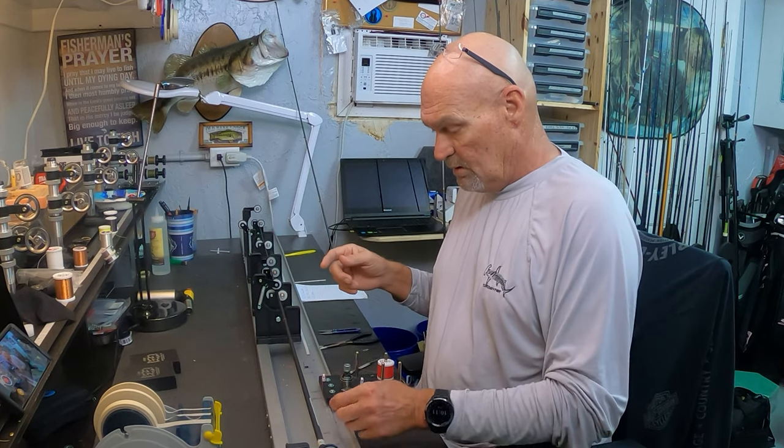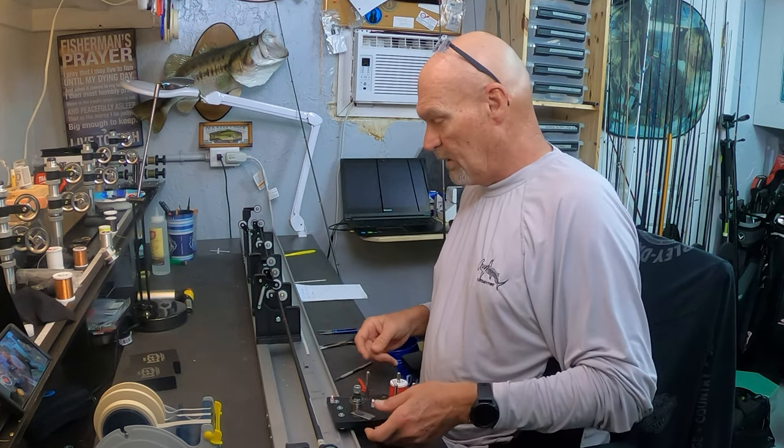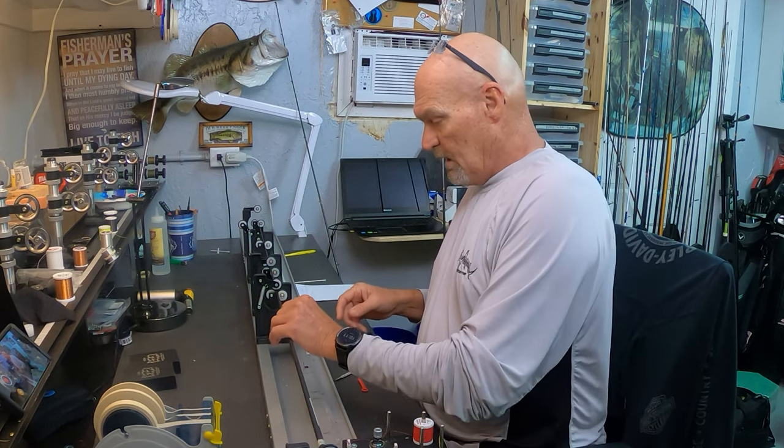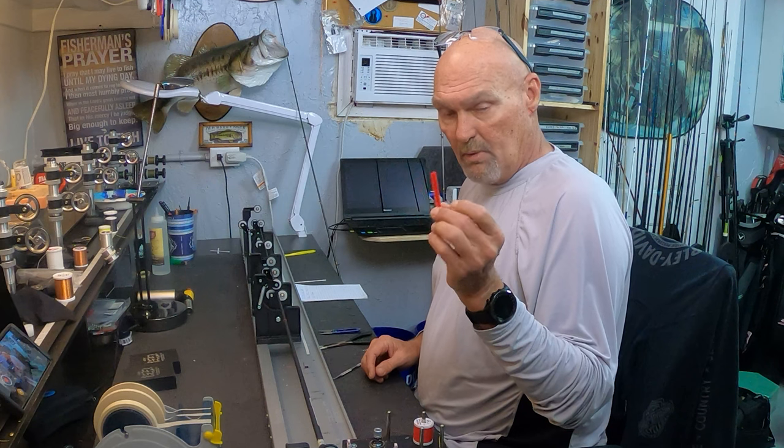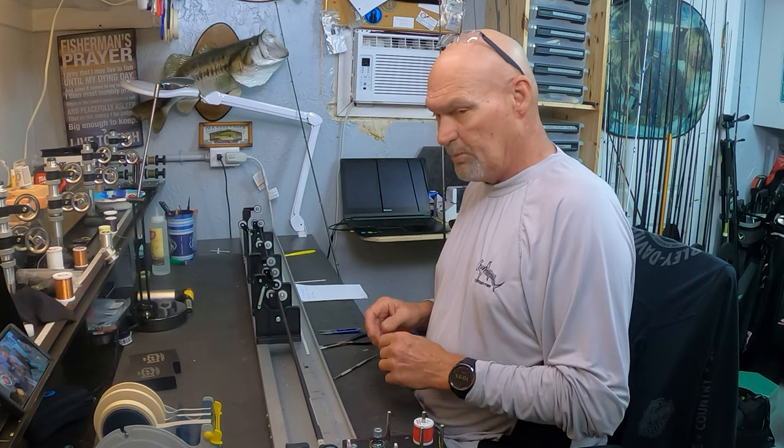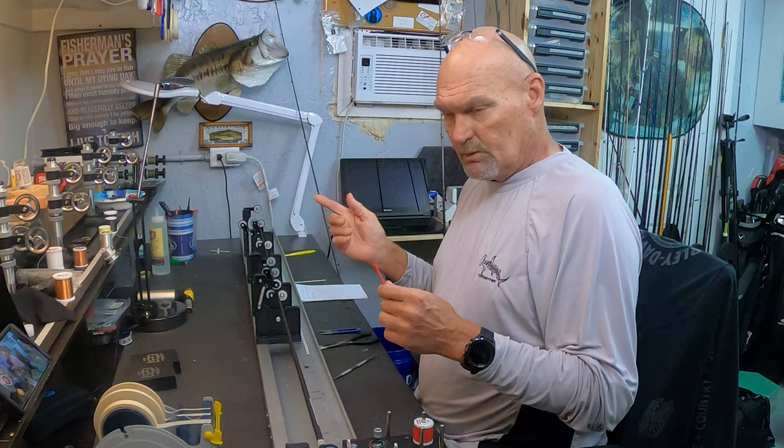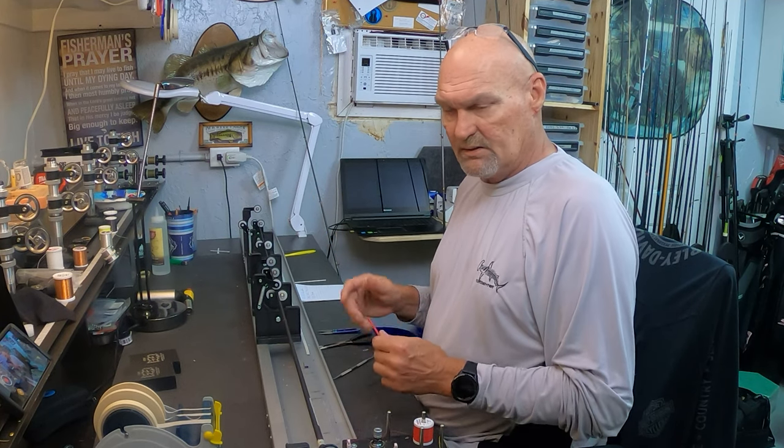All right, so I have a blank checked up in my power wrapper here. I've got the CRB micro guide bands. I normally put extra ones on when I'm doing the static load test, and this holds my small guides in place.